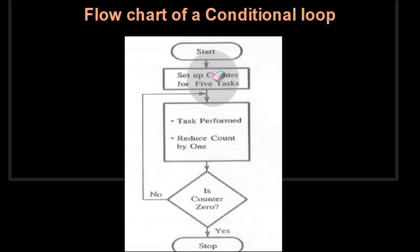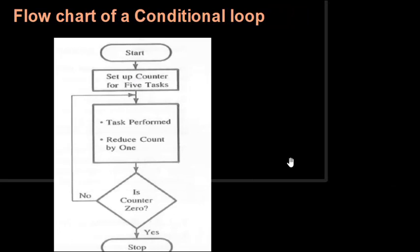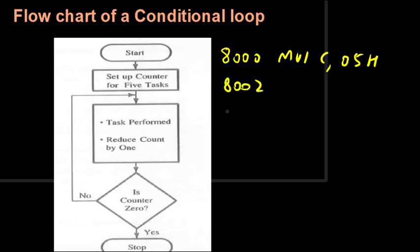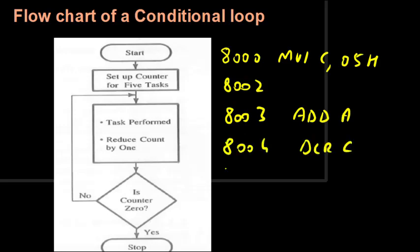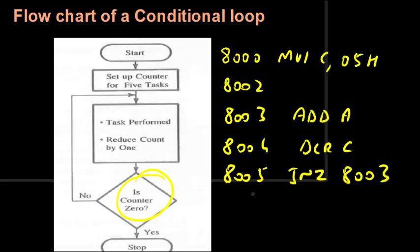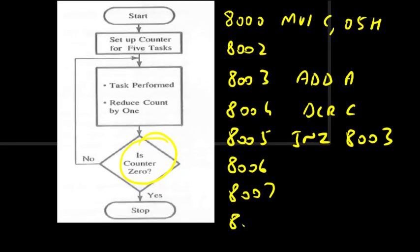As an example of a conditional loop, suppose we want to add the contents of register A five times. The very first task is to store 05H in register C as the count. Then the task is to ADD A, followed by DCR C to decrement the count, and JNZ 8003 to check the condition — whether the counter is zero. Finally at address 8008 we have the HLT instruction.